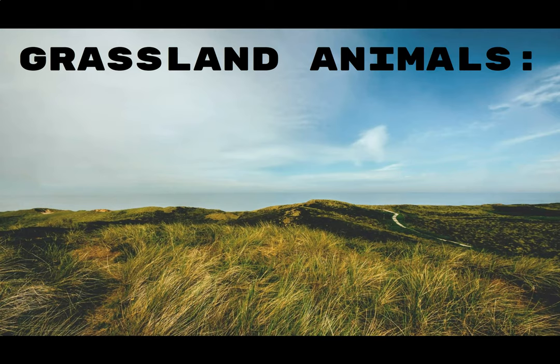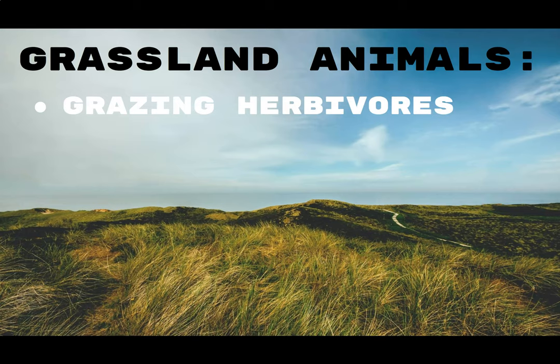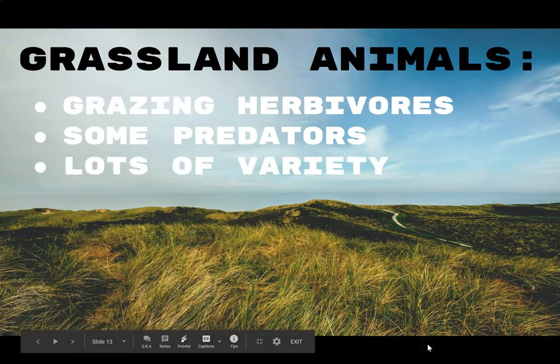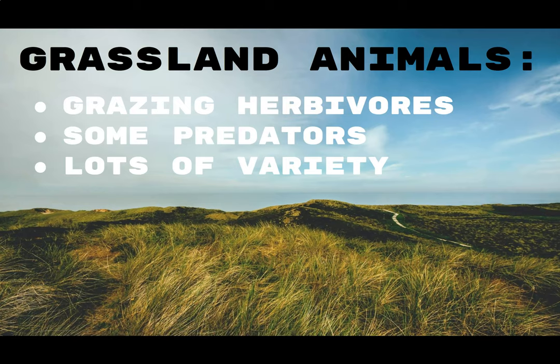Grassland animals are often grazing herbivores — animals that can eat grass. If the most abundant food is grass, the animals who live there will be ones who can eat grass. If you have herbivores, that means you can also have omnivores or carnivores who eat those herbivores. There are some predators in the grassland, and there is a large variety and abundance of animals because there's so much food to fuel the entire food chain.